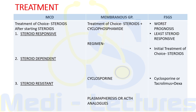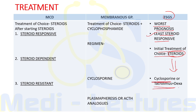For focal segmental glomerulosclerosis, this condition has the worst prognosis and is the least steroid responsive. The initial treatment of choice is steroids. If the patient is not responding, we give cyclosporine or tacrolimus along with dexamethasone.